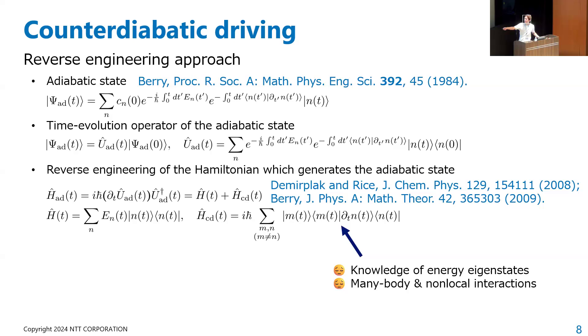By inversely solving the equation for this adiabatic state, we can construct some Hamiltonian which realizes this adiabatic state. It can be decomposed into the original Hamiltonian term and an additional driving term. This additional driving term is known as the counter-diabatic term, or counter-diabatic Hamiltonian. However, to construct such an external field, we have to know the energy eigenstate of the system, which is exponentially difficult. Furthermore, energy eigenstates are not local in space, requiring many-body and non-local interactions.